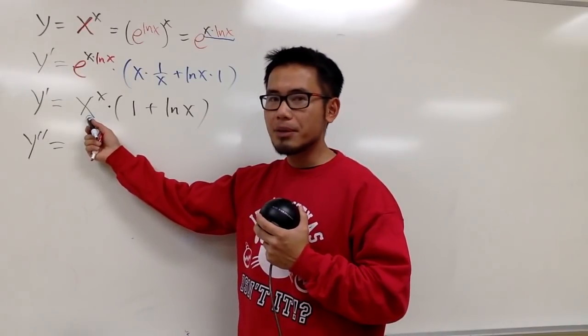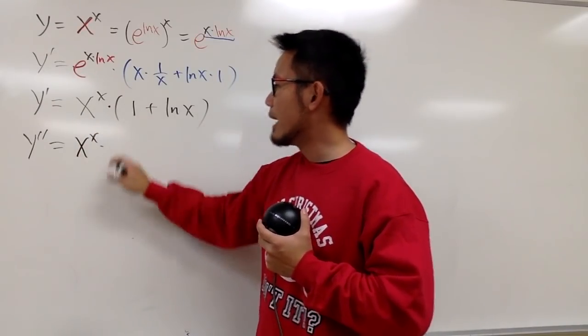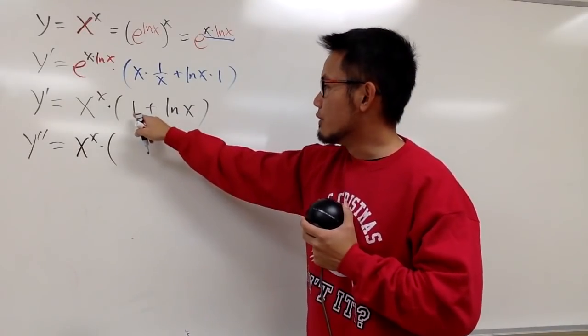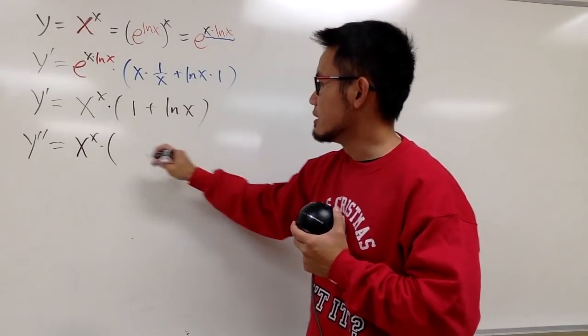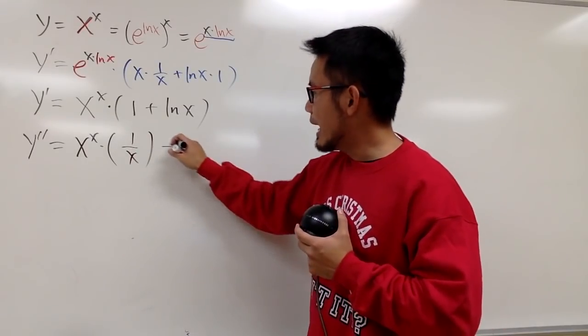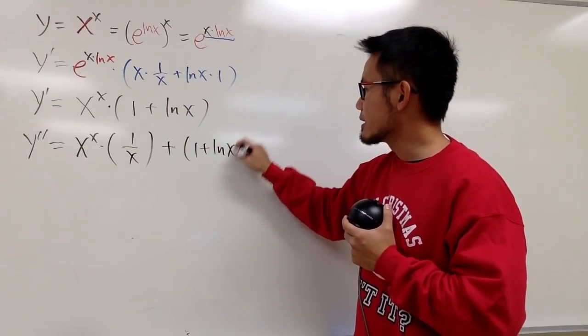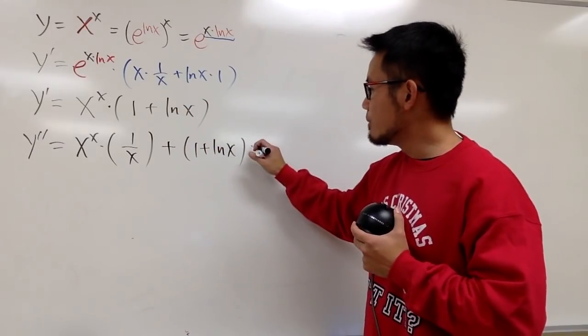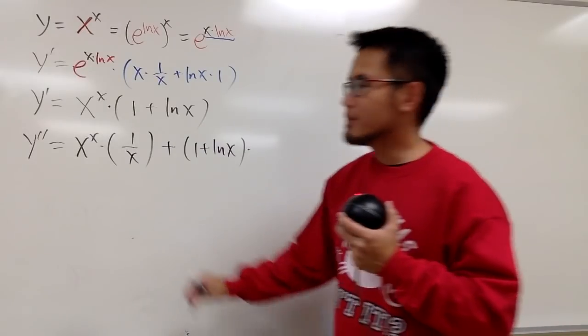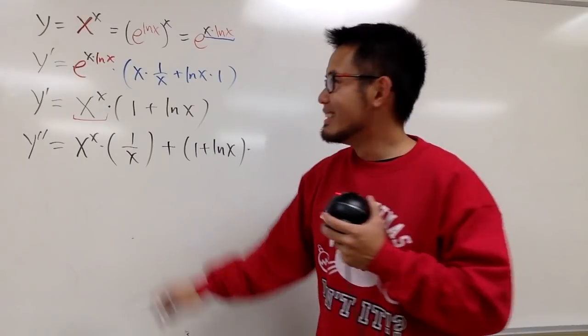And, let's go ahead and keep the first function, x to the x, right here. And we multiply by the derivative of this. The derivative of 1 is 0. The derivative of ln x is 1 over x, like that. And then, we add the second function, which is 1 plus ln x. And we multiply by the derivative of x to the x.